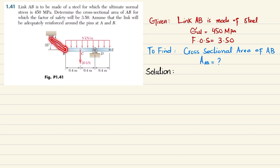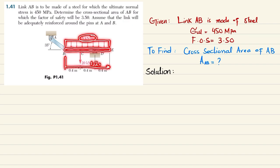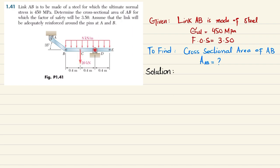We have another member BE with a uniformly distributed load of 8 kilonewtons per meter over a length of 1.2 meters. At point C we have a load of 20 kilonewtons, and at point D we have a pin support. We need to find the cross-sectional area of link AB, for which we will need the force in AB.